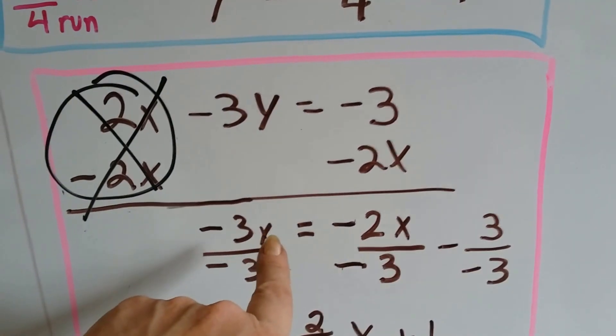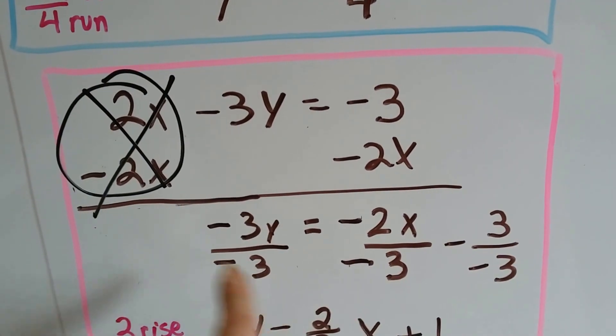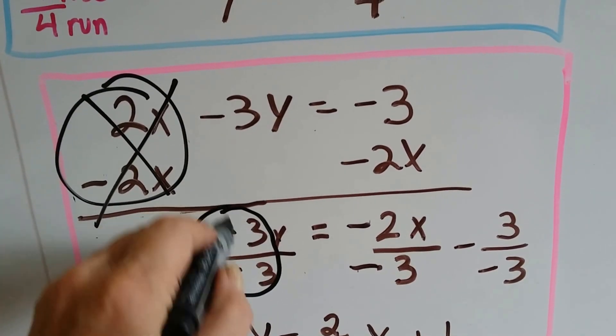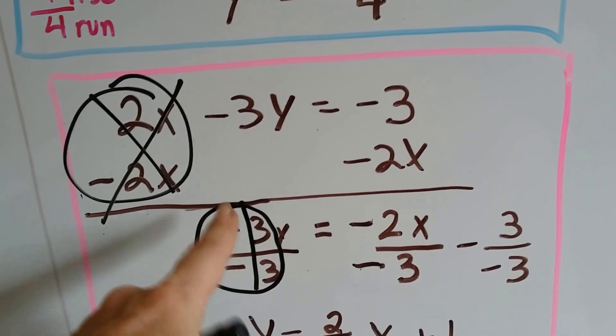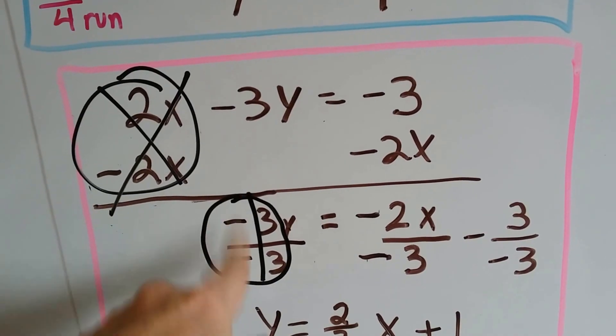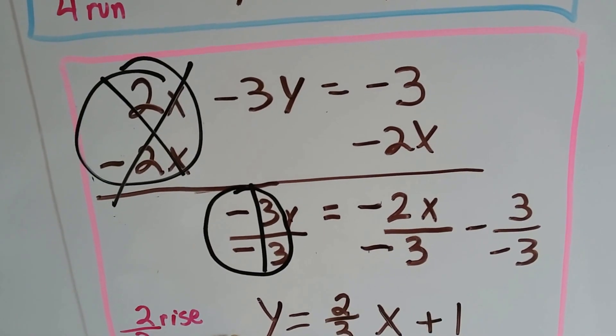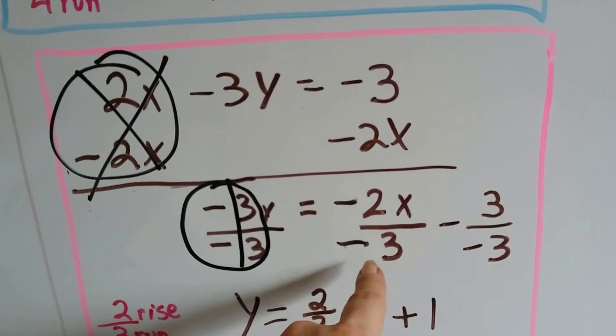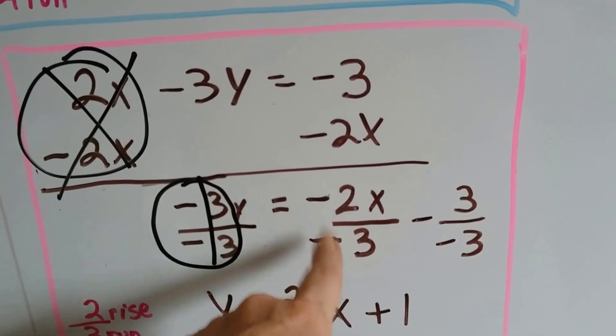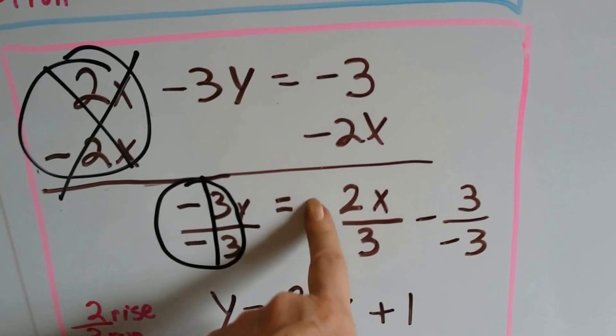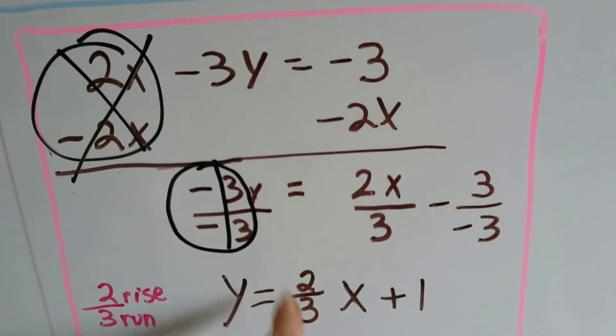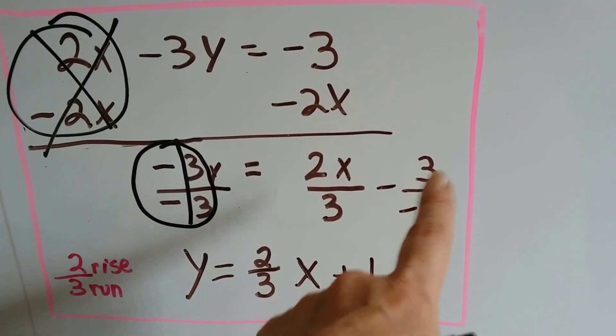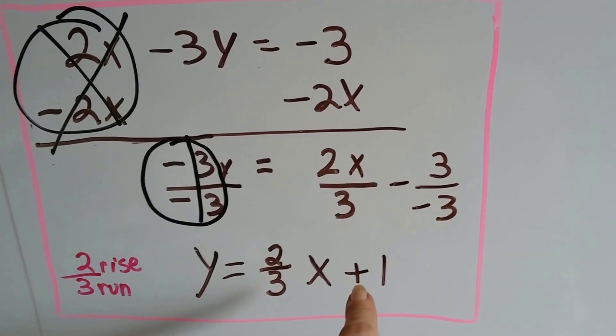So to get this y by itself, we've got to divide each term by that negative 3. That's going to bring back our friend again, that 1. And because these are both negatives, that y is now a positive. And we've got a negative 2x divided by a negative 3, that's going to make it a positive because we have two negatives. So now we've got a two-thirds slope, x, and this negative 3 over the negative 3 is going to give us a positive 1.